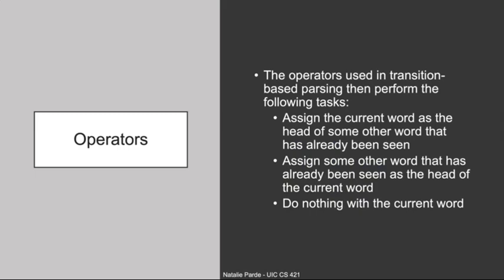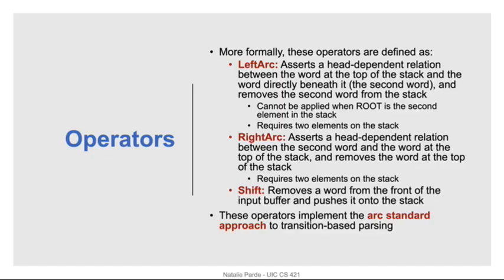Throughout all of this, the operators in the transition-based parser will focus on just a couple of tasks. They'll assign the current word as the head of some other word that's already been seen, or they'll assign some other word that's already been seen as the head of the current word, or they'll just do nothing with the current word and move on to the next word in the input. More formally, in the ARC standard approach, these operators are referred to as left ARC, right ARC, and shift.